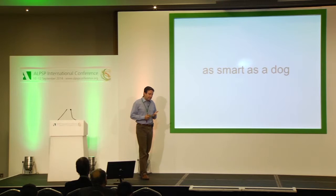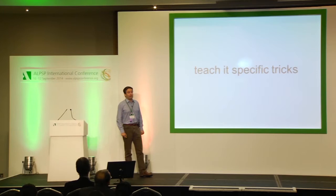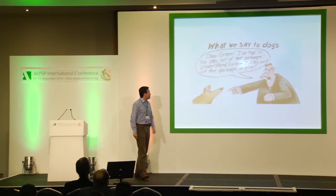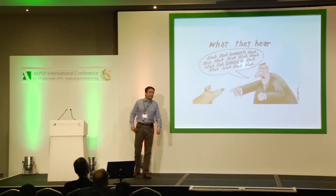In that context, I find it useful to think of the analogy that a computer is about as smart as a dog. If I put sufficient effort into it, I can teach it to do very specific tricks. The trick is well illustrated by this joke about what we say to dogs: 'Okay Ginger, I've had it. Stay out of the garbage. Understand, Ginger? Stay out of the garbage or else.' And of course the only thing the dog understands is 'blah blah Ginger, blah blah blah Ginger, blah blah blah.' It understood its own name.